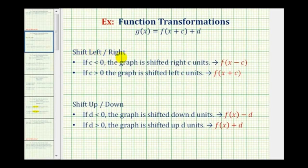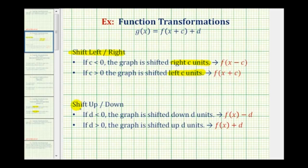For a shift left or right, the value of c is either positive or negative. If the value of c is negative, the graph is shifted right c units — this is probably the opposite direction you might think. So if it's x minus c, it's right c units. If c is positive, the graph is shifted left c units, so we'll have f of the quantity x plus c. Our graph is shifted left two units, so c will be positive two. Our graph is also shifted down four units. If d is negative, the graph is shifted down d units, so d is going to be negative four.